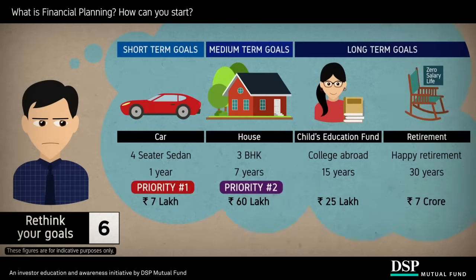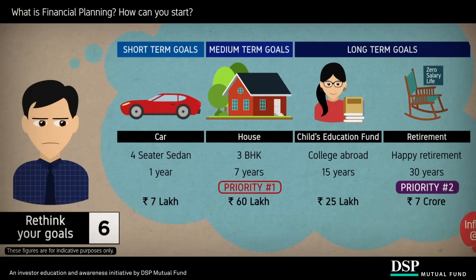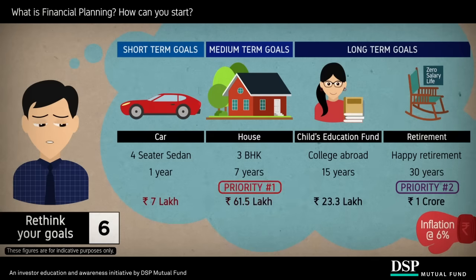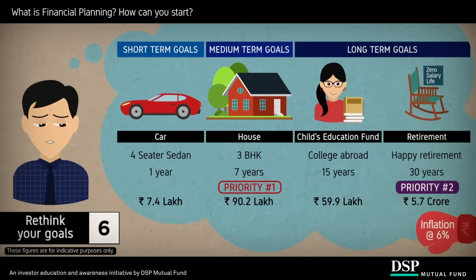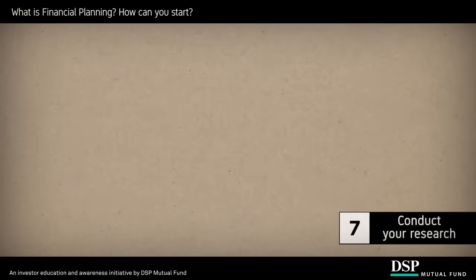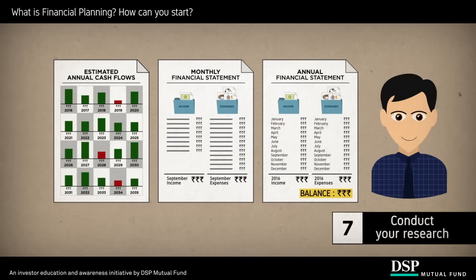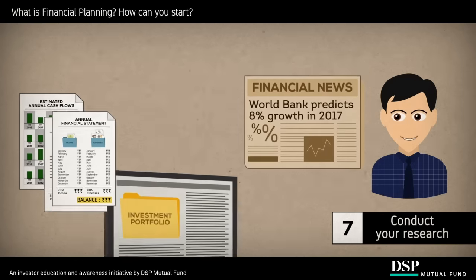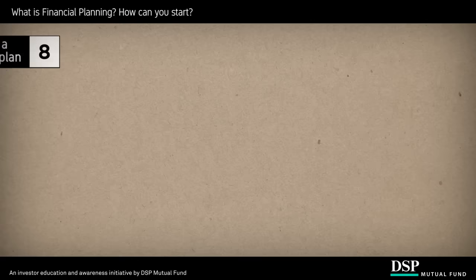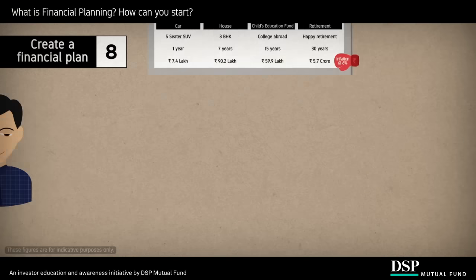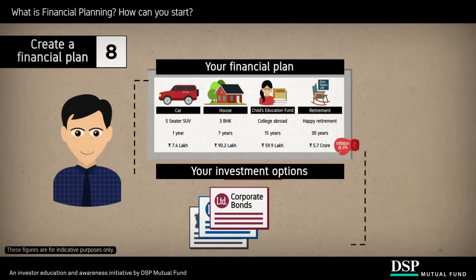Looking ahead will help you plan and invest better. Rethink your goals — once you have an estimate of your expected cash flows for the coming years, realign your goals considering your priorities as well as factors such as inflation, which will make these goals more expensive in the future. Conduct your research — gather all the details of your financial status and study the various investment options that are available.